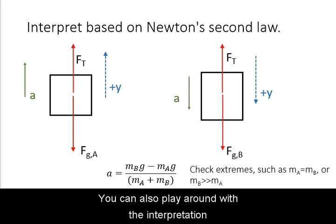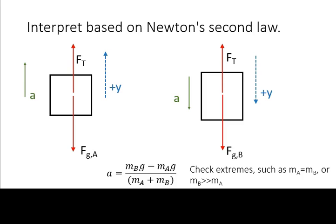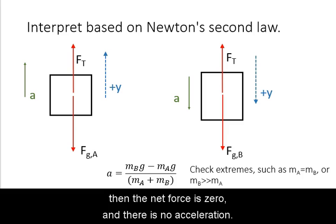You can also play around with the interpretation by considering the extremes. For example, if mass A is equal to mass B, then the net force is zero and there is no acceleration.